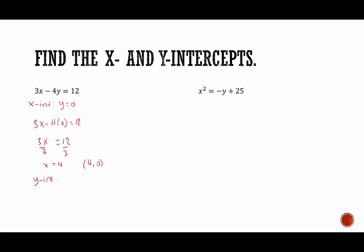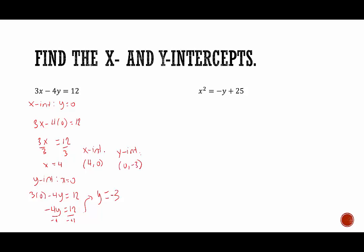To find the y-intercept, we will set x equal to 0. That would be 3 times 0 minus 4y equals 12. 3 times 0 is 0, so we get negative 4y equals 12. Dividing by negative 4, we end up with y equals negative 3. So we have an x-intercept of (4, 0) and a y-intercept of (0, negative 3). Anytime we have a slanted line, there should be two intercepts, unless there's only one, in which case it's the origin.